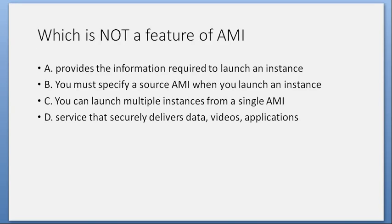Which is not a feature of AMI? A. Provides the information required to launch an instance. B. You must specify a source AMI when you launch an instance. C. You can launch multiple instances from a single AMI. D. Service that securely delivers data, videos, applications. Answer: D. Service that securely delivers data, videos, applications — that is not an AMI feature.